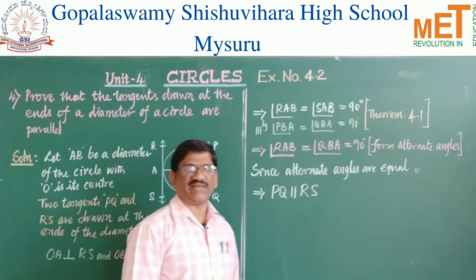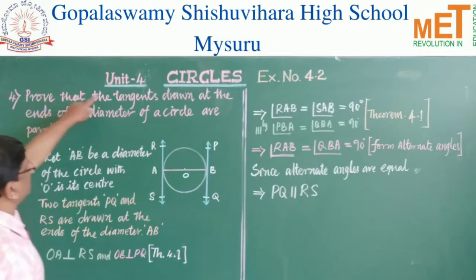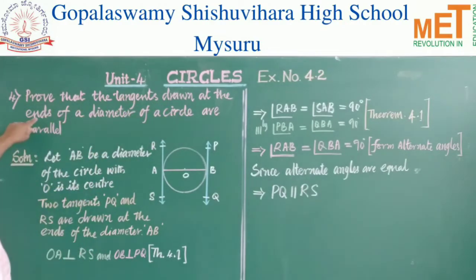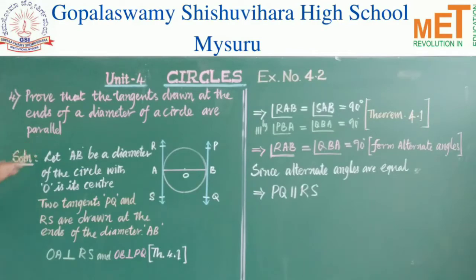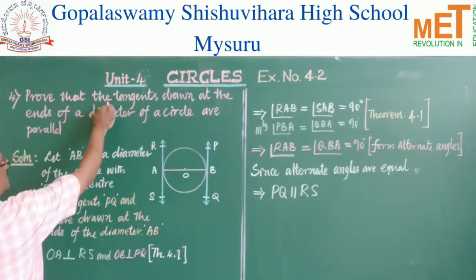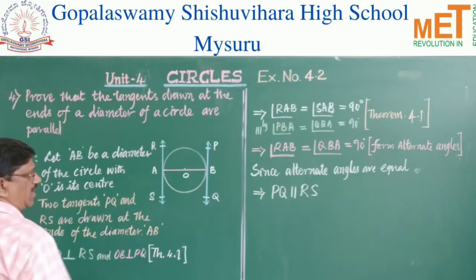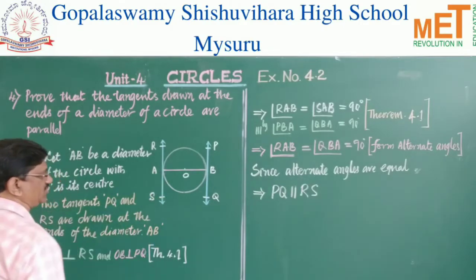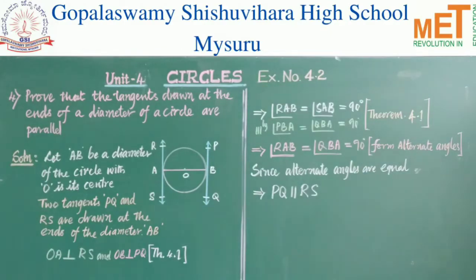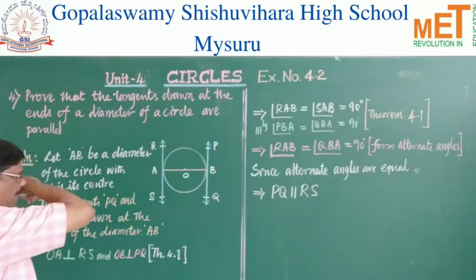Now children, the fourth problem in the exercise we shall discuss. It says: prove that the tangents drawn at the ends of a diameter of a circle are parallel. According to the statement, I have drawn a circle with diameter AB, and at the ends A and B I have drawn two tangents RS and PQ. We have to show that PQ is parallel to RS.